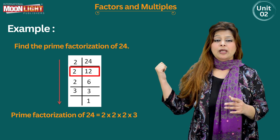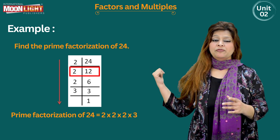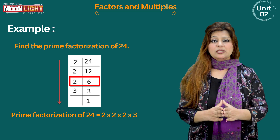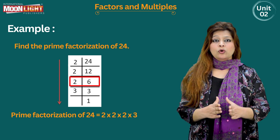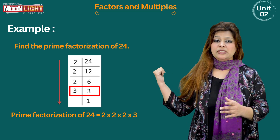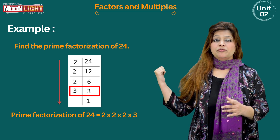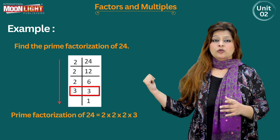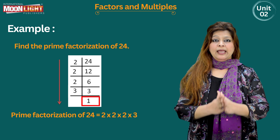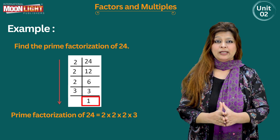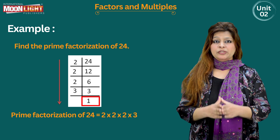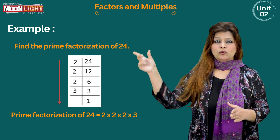We divide 6 by 2 again, since 6 is divisible by 2. Two threes are six, giving us 3. Then three ones are three, so we divide 3 by 3 and get 1. We stop the process here because we have reached the number one, as stated in the steps of prime factorization. All the divisors we used — 2, 2, 2, and 3 — are prime factors.